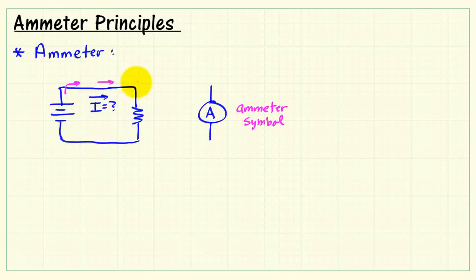We want to get the ammeter somehow involved in the circuit in order to measure this current circulating clockwise. Now somehow we've got to get that to go through our electrical flow meter, so to speak.